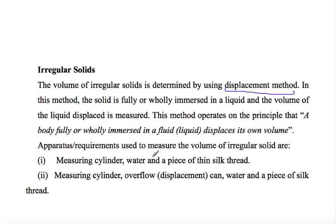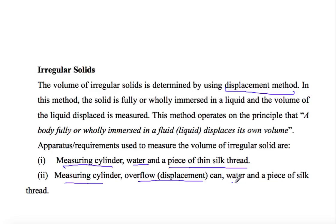The equipment required to measure the volume of an irregular solid includes: a measuring cylinder, water, and a piece of thin silk thread. For the second method, an overflow displacement can is used along with water and a silk thread.